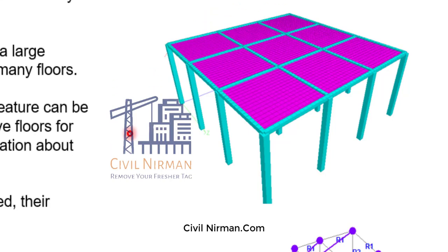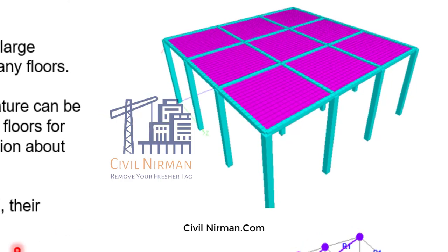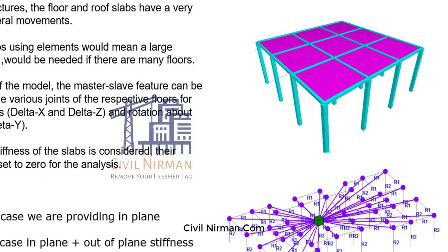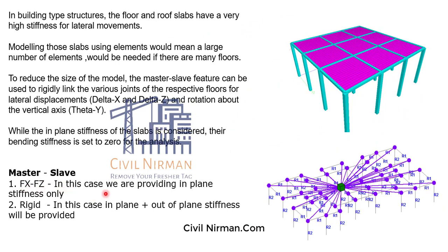The second option is master-slave. One important thing to take care of: in the case of master-slave, we need to consider in-plane stiffness only — FX and FZ. If you go with the 'Rigid' option, out-of-plane stiffness will also be considered. Since the slab provides in-plane stiffness only, we should not use the Rigid option. You should go with FX and FZ only in the case of master-slave.